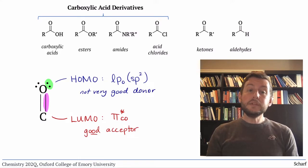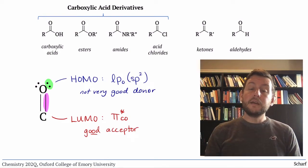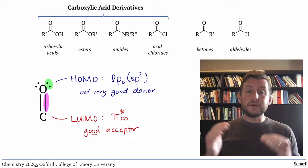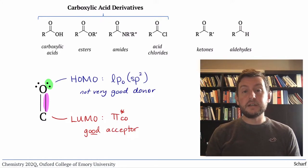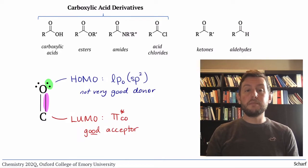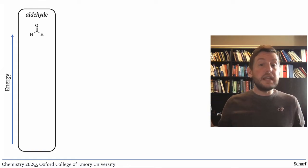Some of these functional groups are more electrophilic than others, though. Let's explain this relative reactivity in terms of molecular orbital energy, starting with the simplest carbonyl containing functional group, the aldehyde. It basically has a naked, plain old CO pi star orbital.